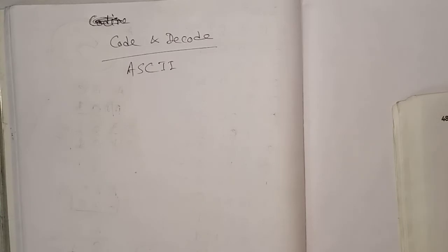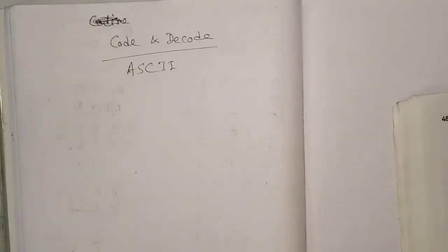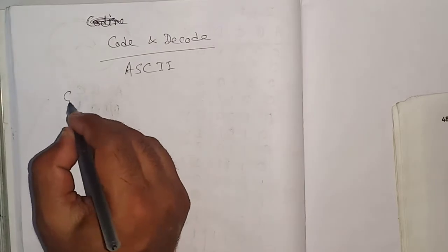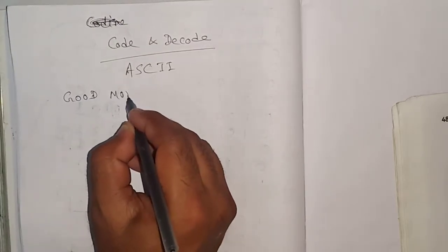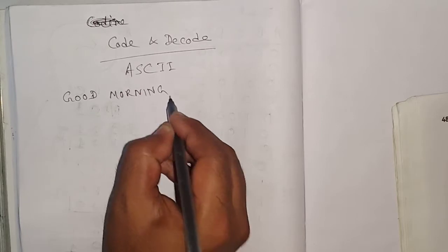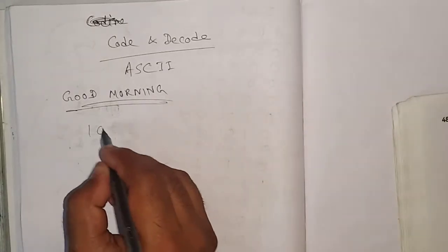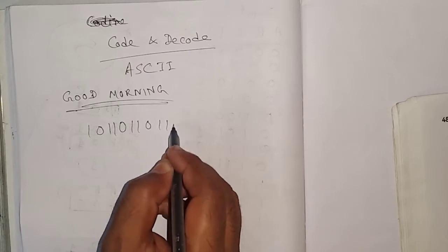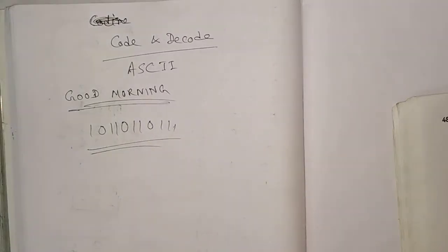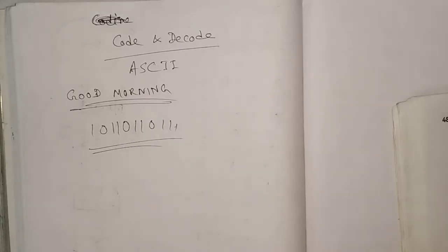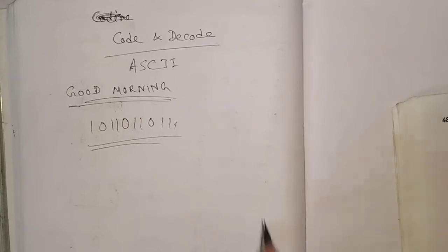We change whatever message we are sending to a computer into binary language, and binary back to our language. For example, if I am writing 'good morning', what is the value of this in binary form? And if I write a binary string like 1 0 0 0 1 0 0 1 1 1 1, what is the meaning of that message in English? Today we will learn English language to binary language and binary language back to English, through ASCII code.